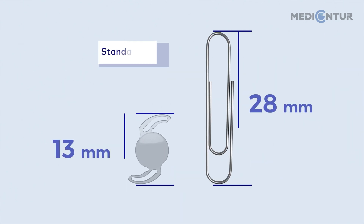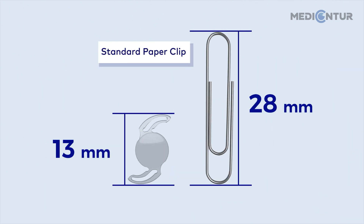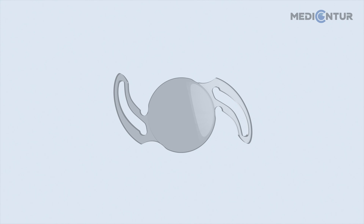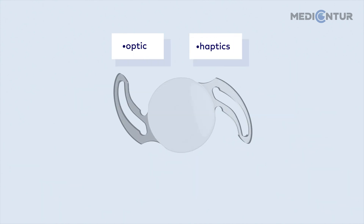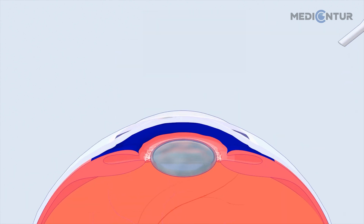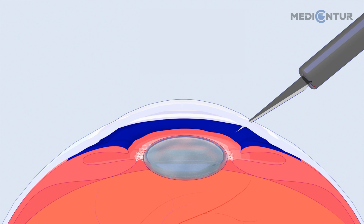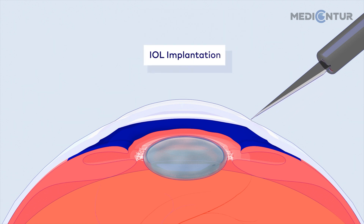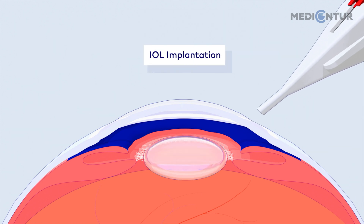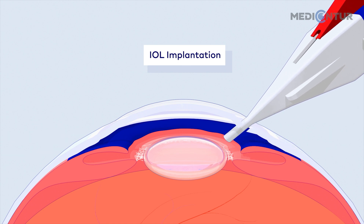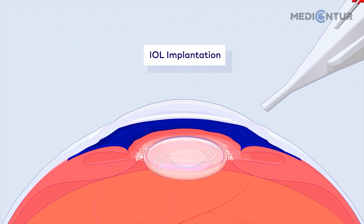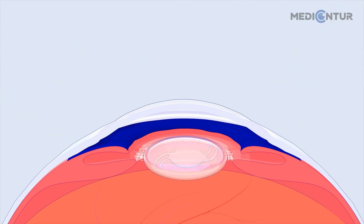With an overall length of 13mm, this tiny implant is made from biocompatible material designed to replace the natural lens. It consists of an optic in the middle and haptics on each side to ensure stability. Once the cloudy natural lens is removed from the capsular bag during surgery, the IOL is then injected through a tiny opening and placed into the exact position of the natural lens.